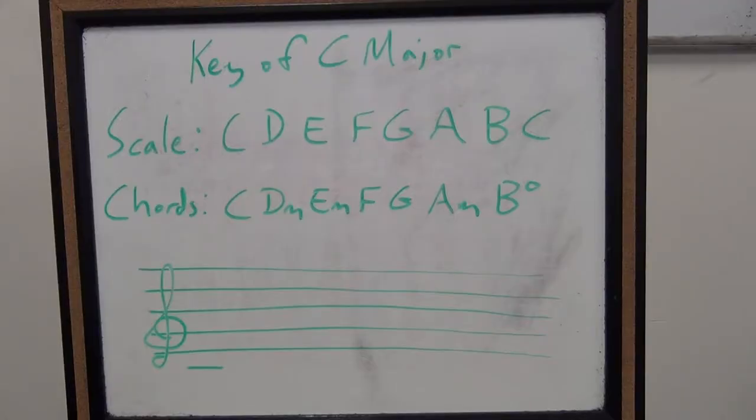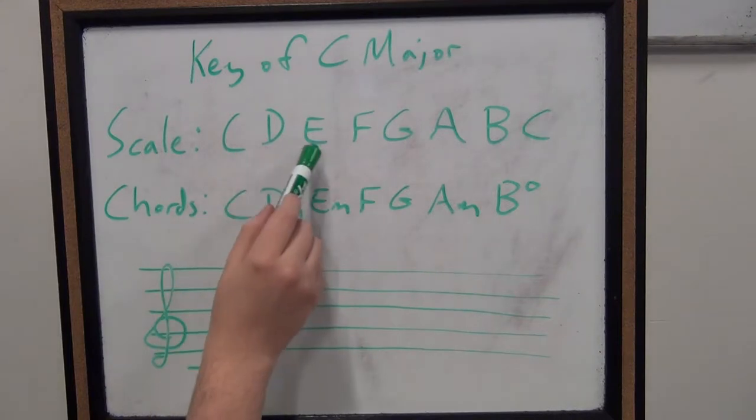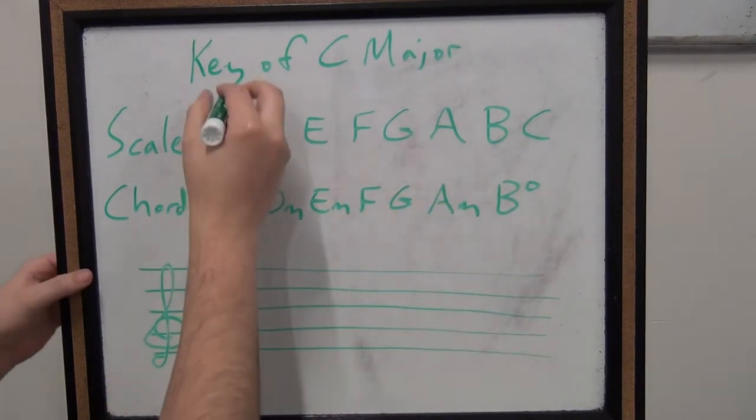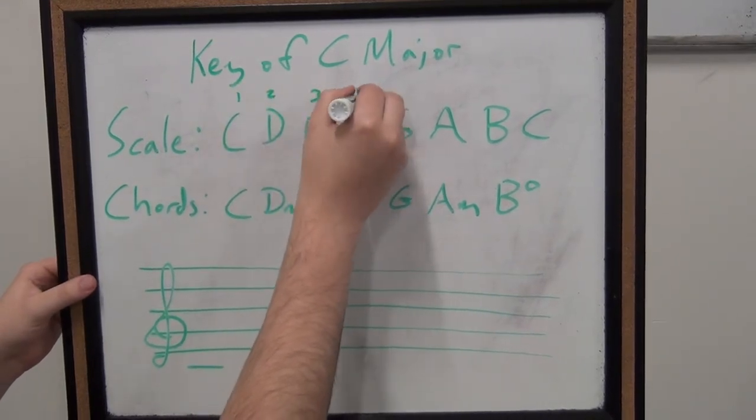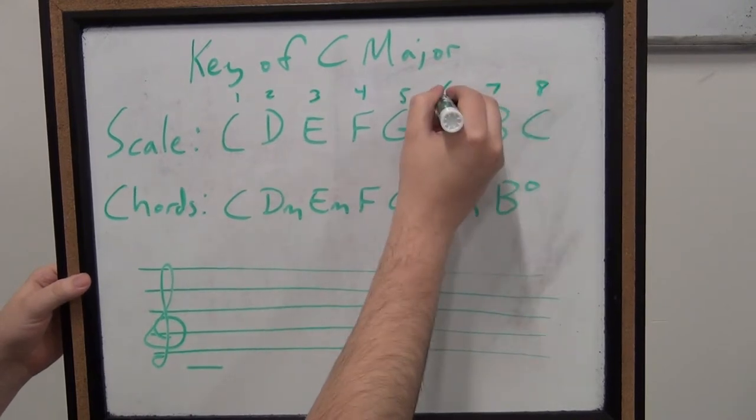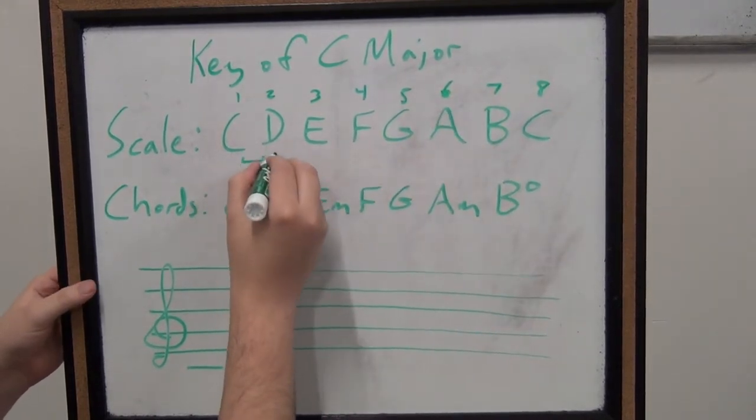So our scale for C major is super easy. It just goes right in order. C, D, E, F, G, A, B, C. If you want to get ahead of the game, what's good to think about is our whole steps and half steps. This is going to be our template for how our other keys work once we start understanding other keys.